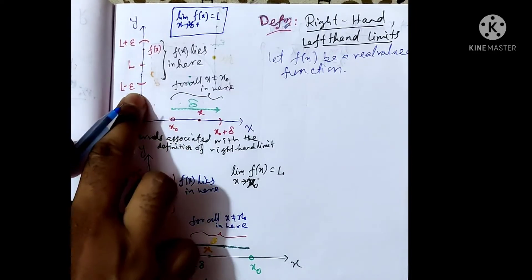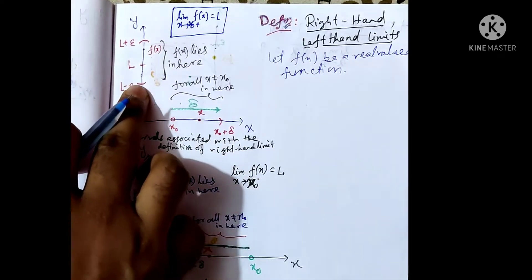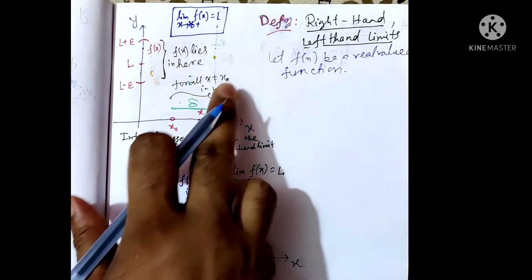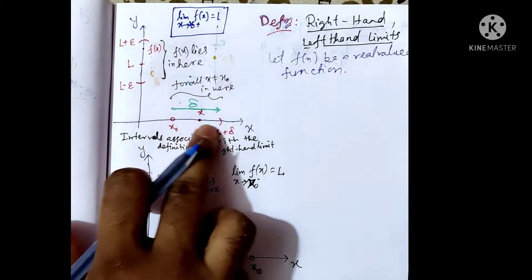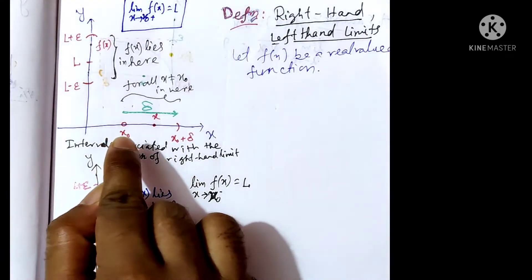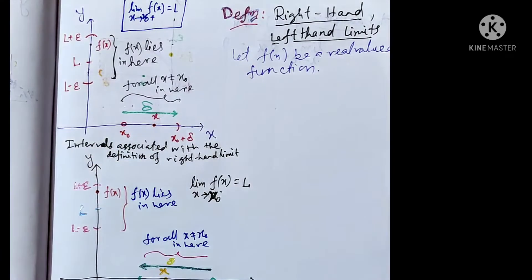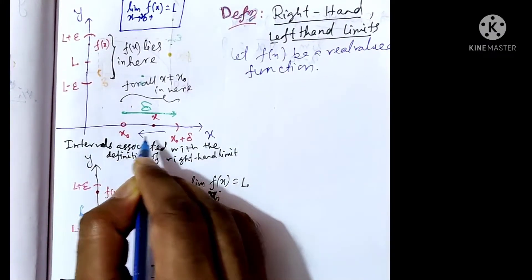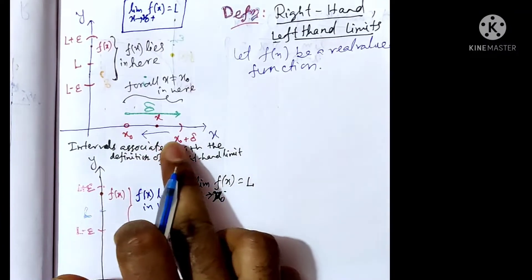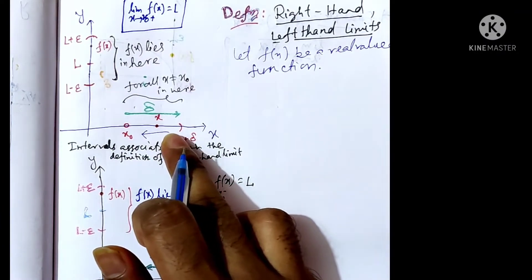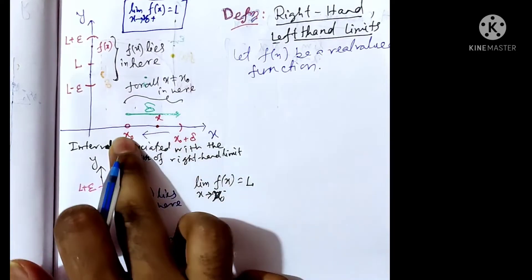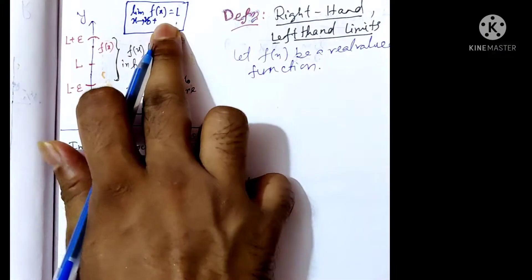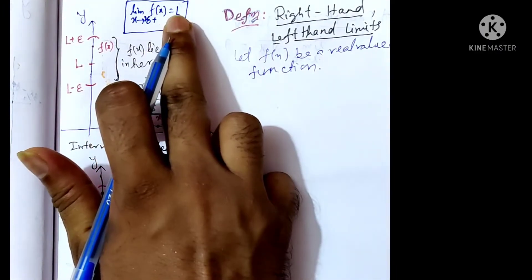Here, l plus epsilon and l minus epsilon are shown, and f(x) lies in this region for all x not equal to x₀ in this region. If we go from x₀ plus delta toward x₀ — that is, if x tends to x₀ from right to left — then we say that the limit as x tends to x₀⁺ of f(x) exists and equals l.